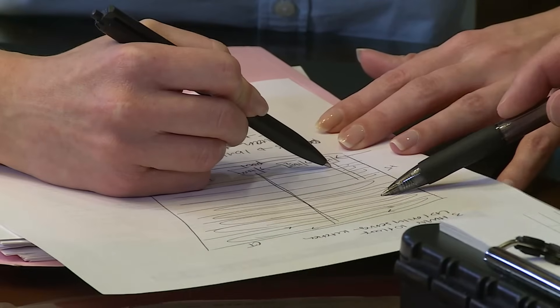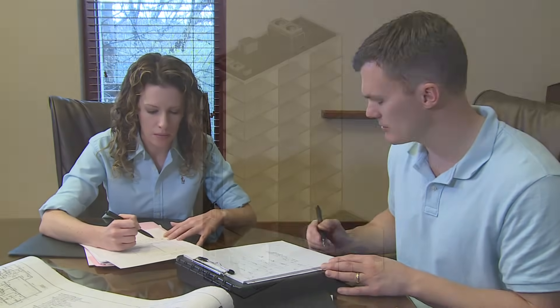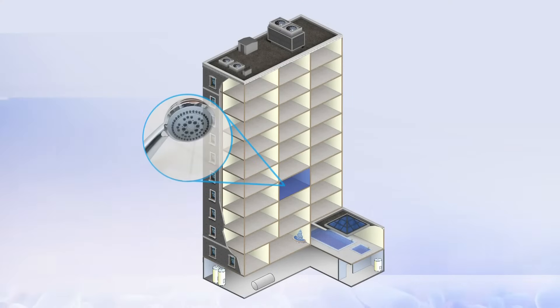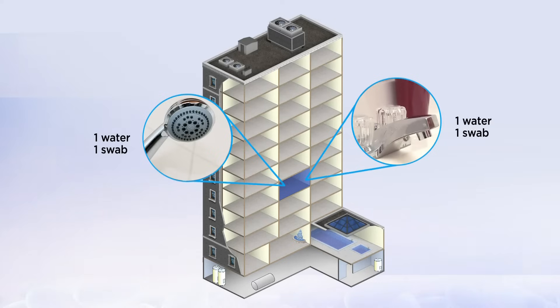In this example, let's tally the number of samples we'll need. You should collect two types of samples from each outlet or device, a one liter bulk hot water sample, and a swab of the biofilm.